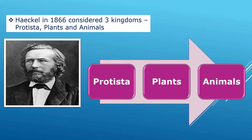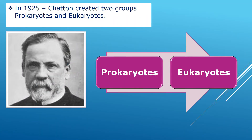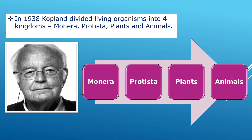After Carolinus, scientist Haeckel in 1866 divided living organisms into three groups: Protista, plants, and animals. After that, in 1925, scientists created two groups for living organisms: prokaryotes and eukaryotes. Then in 1938, Copeland divided living organisms into four kingdoms: Monera, Protista, plants, and animals.